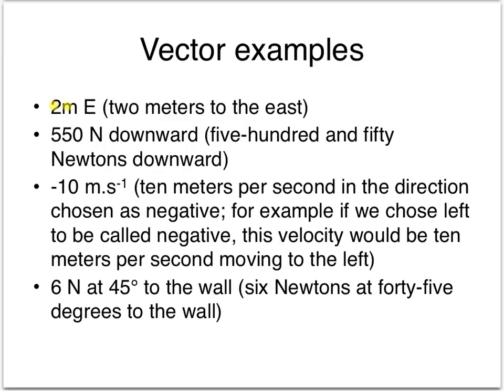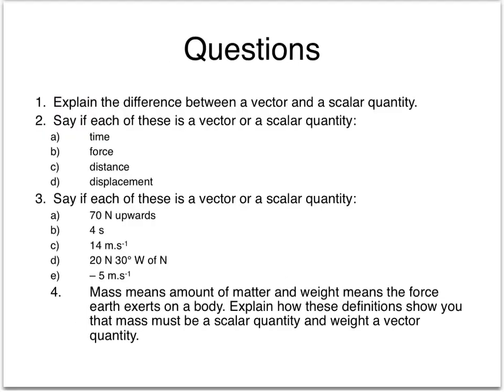You have to also give a direction, for example, 2 meters towards the east, or if we're dealing with force, for example, 550 newtons downward. One always has to describe a vector quantity with both a magnitude and a direction.